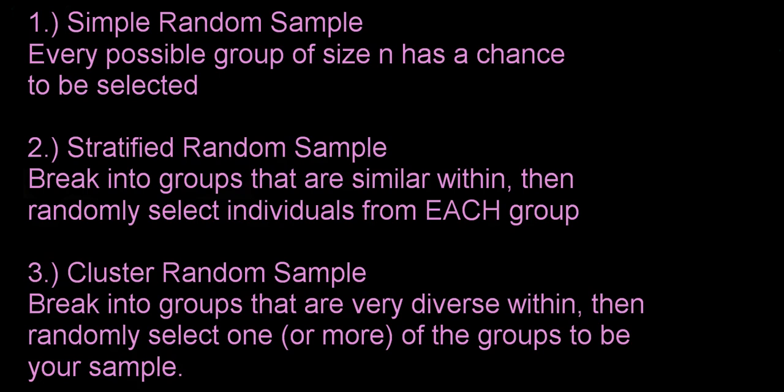In a simple random sample, every possible group of size N has a chance to be selected. So let's say that we wanted to select a sample of 50 people. Any possible group of 50 people must have a chance. So if you have a population of all adults in the United States, any possible group of 50 has to have a chance. 50 complete random strangers obviously would probably come up most often. But even you and your 50 family members or you and your 49 family members, that group, even though that would be a very, very unlikely group to randomly be selected, but that group needs to have a chance.